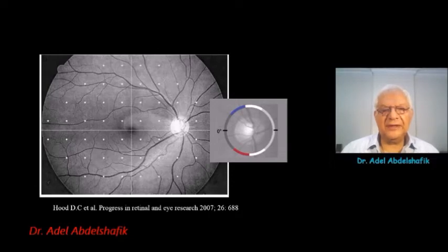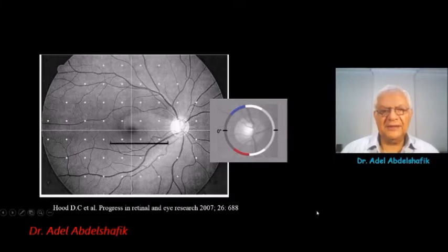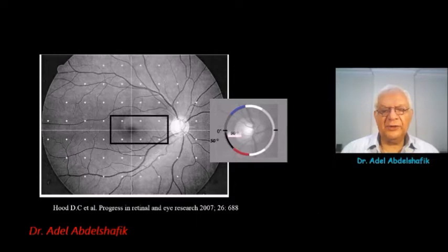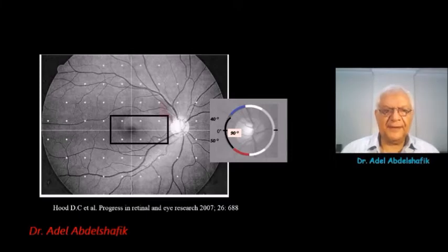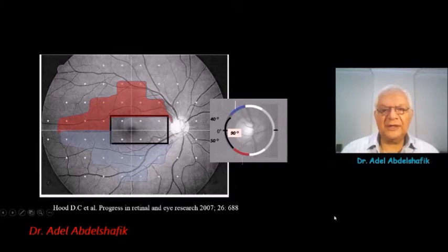In 2007, Harwerth demonstrated the relation between the test locations and the disc. These six points in the field will project into the disc over these 90 degrees. Then this zone up, and similarly the zone down, will project into the disc along these 40 degrees.